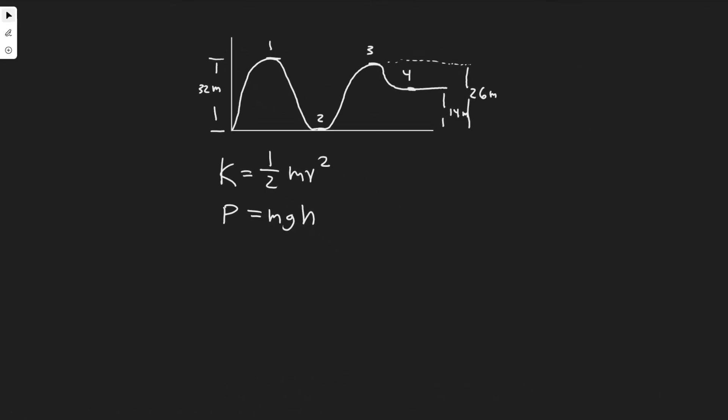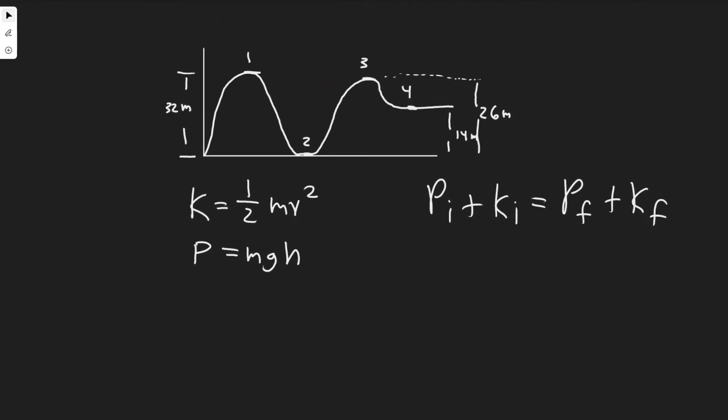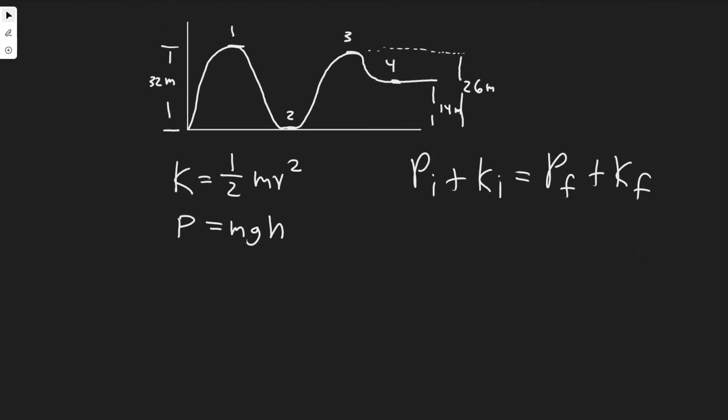So you know that the potential energy plus the kinetic energy at one point, P initial plus K initial equals P final plus K final. Essentially if you want to solve for one of these variables, let's say the speed, that would be K final, we need all these variables. So let's go ahead and do that for the first one. It'll be easier just to see in an example. We need to know the initial potential and the initial kinetic. First thing I know is we're releasing it at rest, meaning its velocity is zero. So the initial kinetic energy is zero.